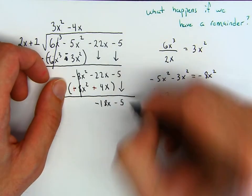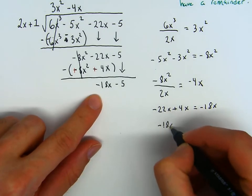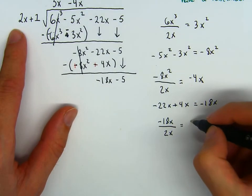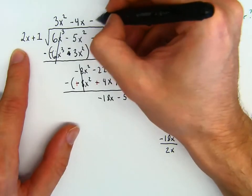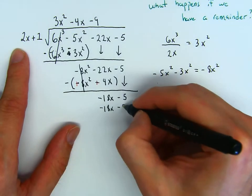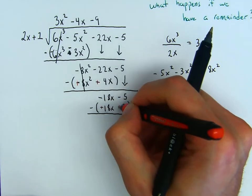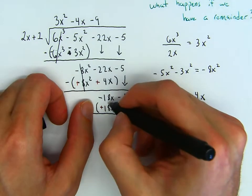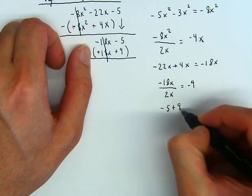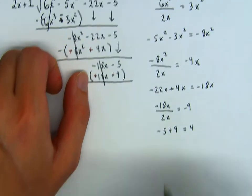How many times does 2x go into negative 18x? This will be negative 9. So we put a negative 9 up here. Negative 9 times 2x is negative 18x. Negative 9 times 1 is negative 9. Parentheses, parentheses, subtract. This becomes positive, this becomes positive. We distribute the negative. So then negative 18x plus 18x is 0 — it cancels. And then what is negative 5 plus 9? This is positive 4. So now we have a 4 over here.